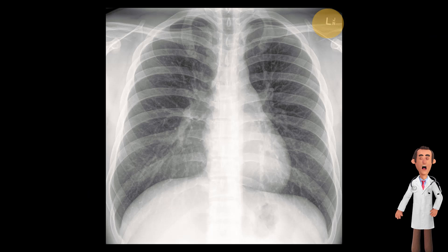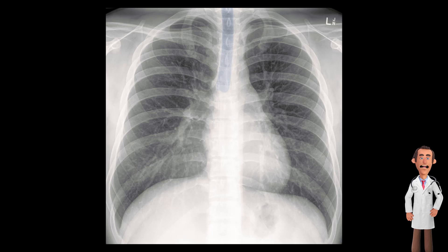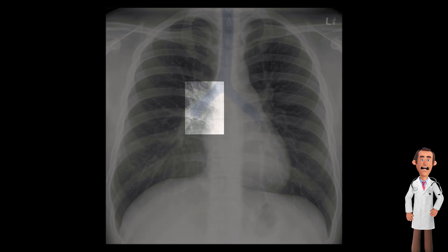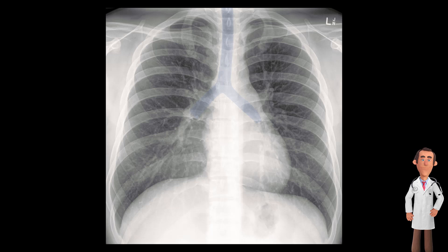The letter R on the top left tells you which side is the left-hand side. Starting with the airways, we can see highlighted here are the borders of the trachea. Typically, this is in the midline, and this can be traced down as it divides into the right and left main bronchi. The right bronchus is usually steeper than the left.